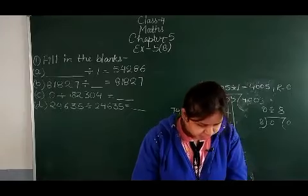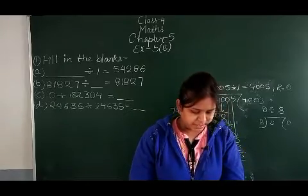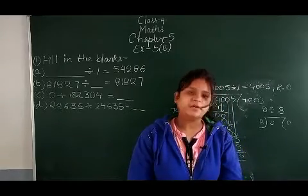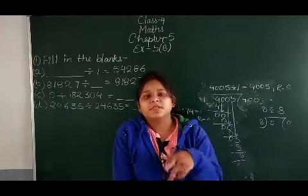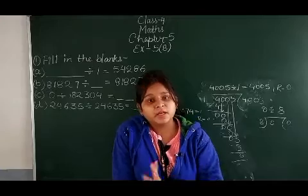Property number 4: A number cannot be divided by 0, and no number can divide 0 as a divisor.